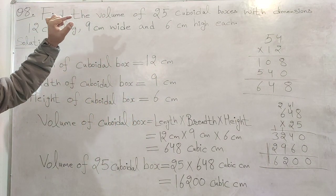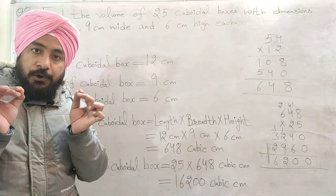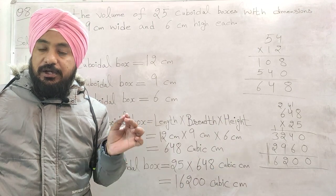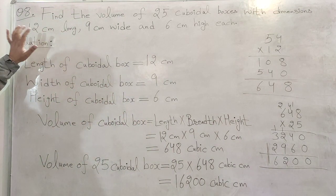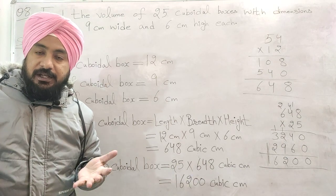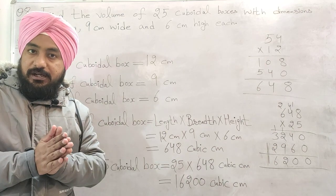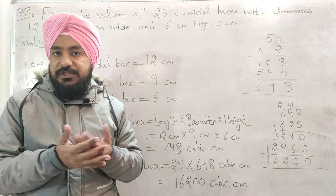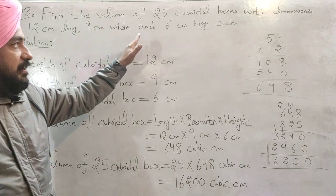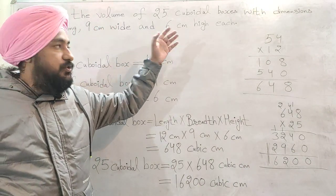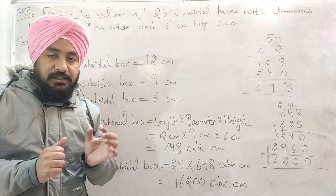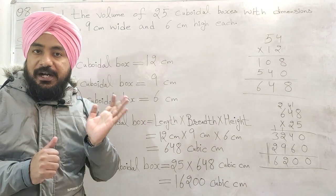For a cuboidal box, we have length, width (or breadth), and height. Whether we say breadth or width, it refers to the same dimension. Here, 6 cm is the height — the word 'high' is used, meaning height. The volume of the cuboidal box requires length, width, and height.